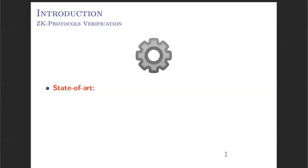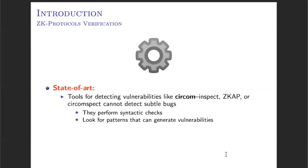Nowadays, there are not many tools for verifying these constraint systems. On one hand, we have tools like the flag-inspect of the CIRCOM compiler, C-CAPE, and CIRCOM-SPED that are based on performing syntactic checks. These tools look for typical patterns that may indicate the presence of an under-constraint bug, but are not able to detect more complex bugs as long as they don't fit these typical patterns.